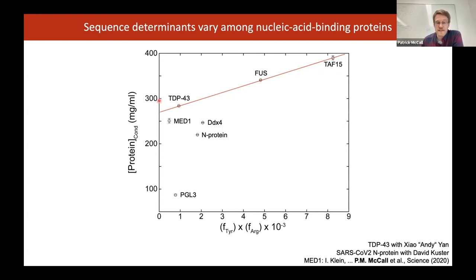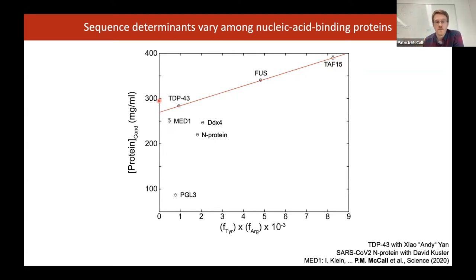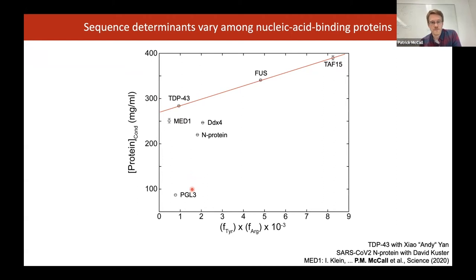What it suggests is that you might have different molecular grammars — different regions of protein sequence space where the rules are slightly different. This could vary from family to family: how things interact and which residues are most important. In the context of these other proteins, tyrosine and RG may not be the dominant factors. This is an area for further research in Tony's group going forward.